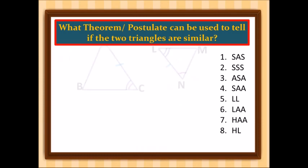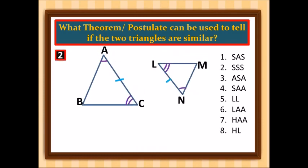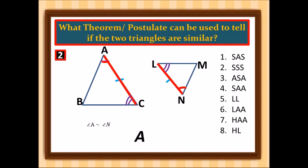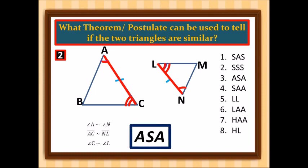For the second example, angle A is similar to angle N. We also have AC similar to NL — that is the side. And angle C is similar to angle L — that is an angle. So for number 2, we will be using the angle-side-angle postulate.